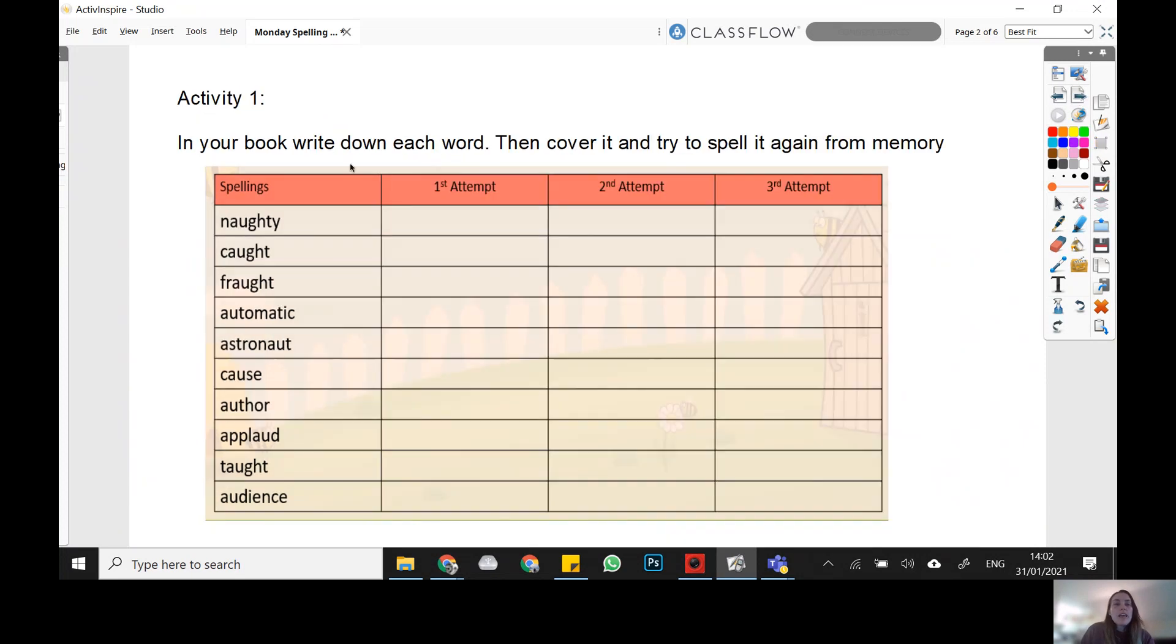So the first activity you're going to do is you're going to write down each of these words into your book. Then you're going to cover them with your hand. Make sure they are completely covered. You can't see it. And I would like you to attempt to spell that word from memory. So spell the word from memory. Then you can take your hand away and check that you spelled them all correctly. And if you did, even if you did, I'd like you to do it one more time. Cover both of your attempts and spell it again. See if you got it correct. And you can use a third attempt if you're really struggling on one in particular.